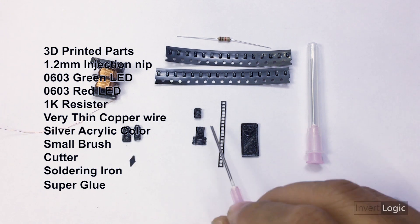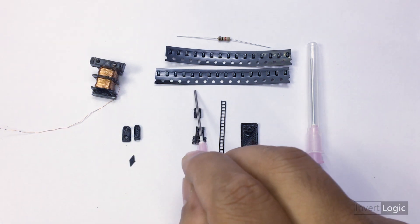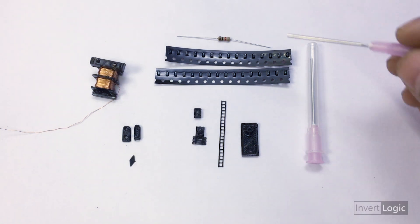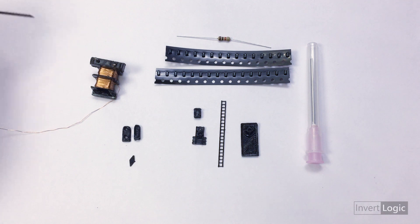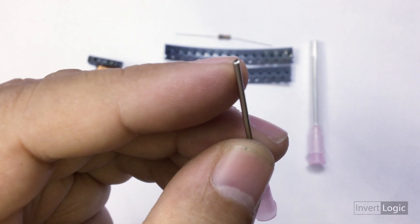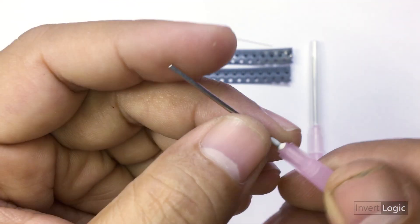We also need these injection nips, LEDs, a resistor, and some wire - very thin wire from a transformer. This is 1.2mm diameter injection. Make sure you file the nip of the injection.